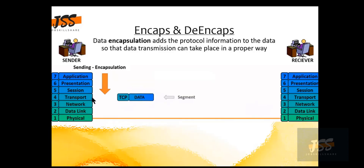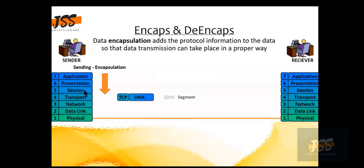As it hits the transport layer, it is now called a segment and the TCP header is attached. The reason we want to go through the transport layer in a proper fashion — not jumping from session layer directly to network layer — is so the data transmission follows the correct path. The TCP header is attached before it reaches the transport layer, and this procedure is called encapsulation.